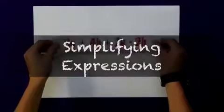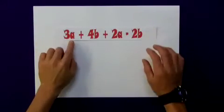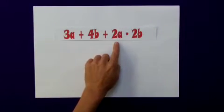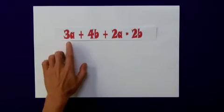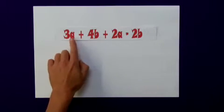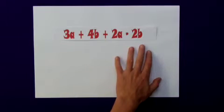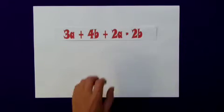I'd like us to consider simplifying this expression: 3a plus 4b plus 2a minus 2b. I'm not expected to solve this. I know this because I have two unknowns, a's and b's, and I don't have an equal sign.